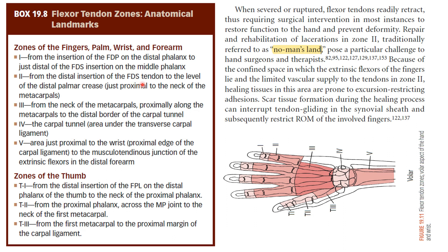FDS, which is flexor digitorum superficialis, is inserted into the PIP joint, and the deep one, flexor digitorum profundus, is inserted into the DIP joint. Zone 1 and zone 2 are described by the fibro-osseous digital sheath.